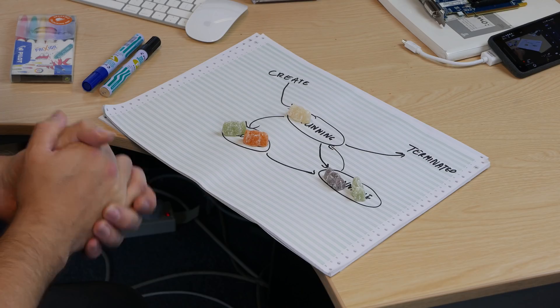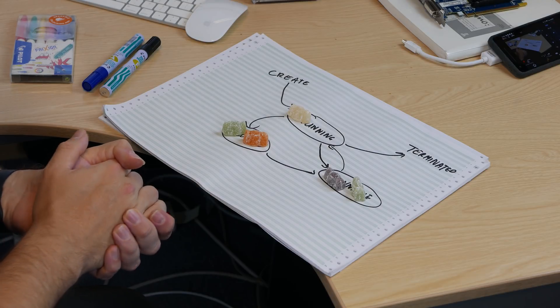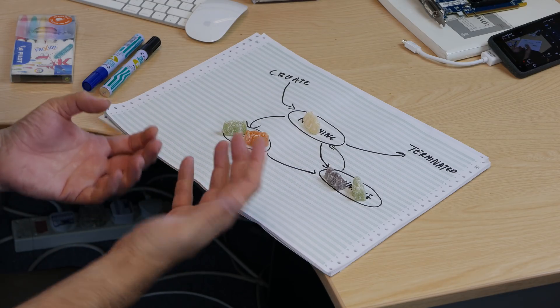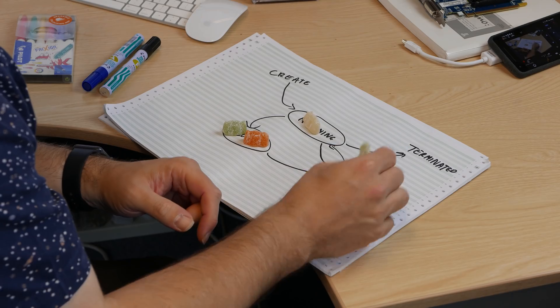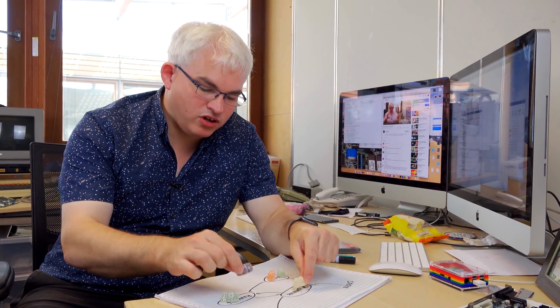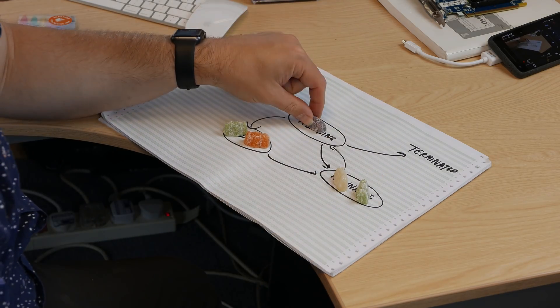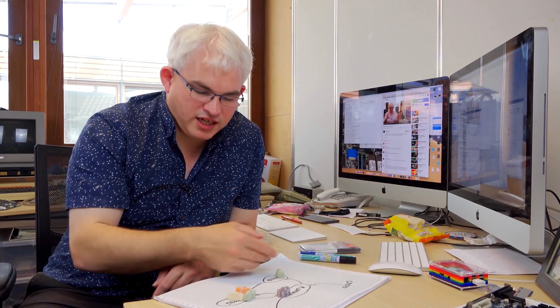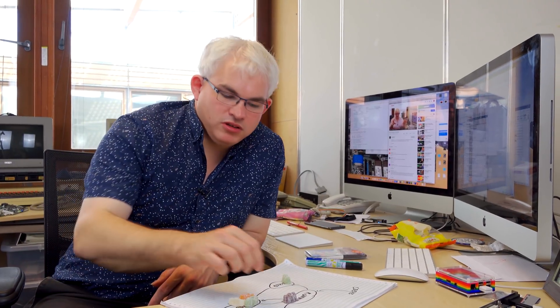In the previous video we looked at how we can build an operating system that can switch between multiple processes to create the illusion that they're running at the same time. We had a model that enabled us to conceive how we had different processes running simultaneously — one that's running, others that are blocked waiting for user input, network IO, or disk IO, and others that are ready to run. If we switch fast enough, say every two hundredth of a second, we can give the illusion that these processes are all running at the same time.